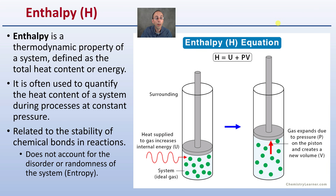Let's get into enthalpy first in a little more detail. Enthalpy is represented by the variable H and is a thermodynamic property of a system defined as total heat content. It is often used to quantify the heat content of a system during a process at constant pressure, and it is related to the stability of chemical bonds in reactions.